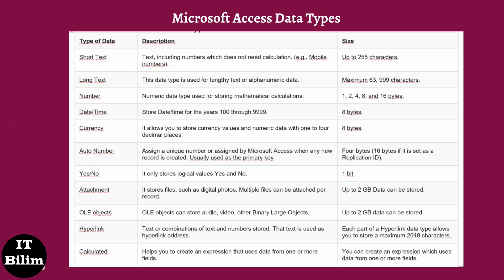Date/Time: stores date and time for the years 100 through 9999. Currency: allows you to store currency values and numeric data with 1 to 4 decimal places. AutoNumber: assigns a unique number automatically assigned by Microsoft Access when any new record is created, usually used as the primary key. Yes/No: it only stores logical values yes and no. Attachment: stores files such as digital photos; multiple files can be attached per record.